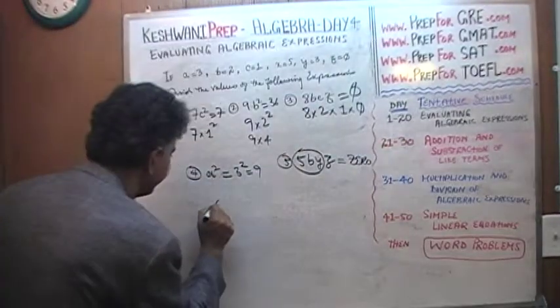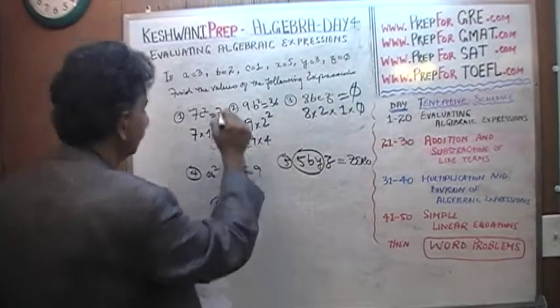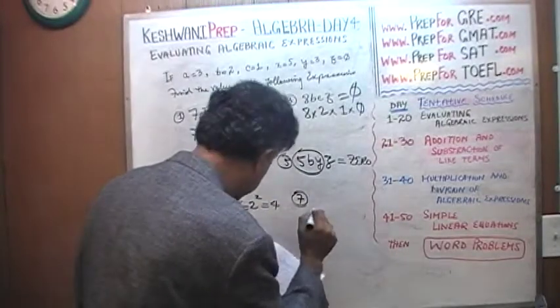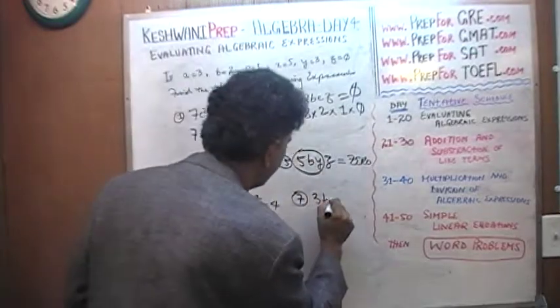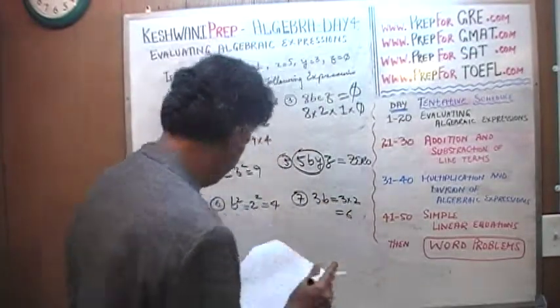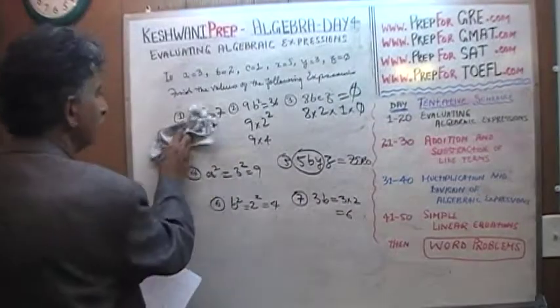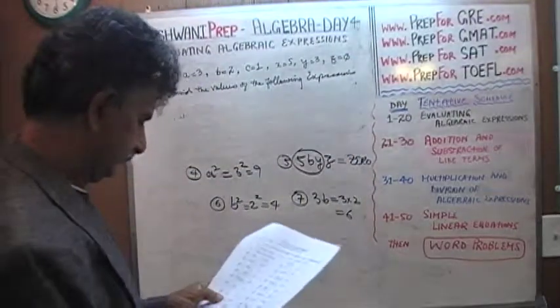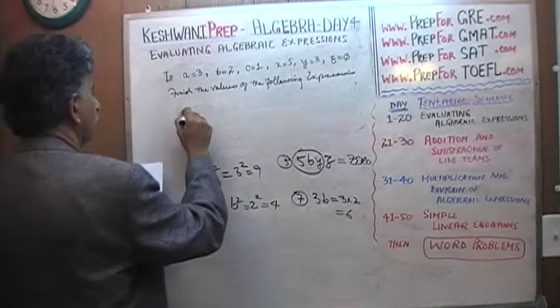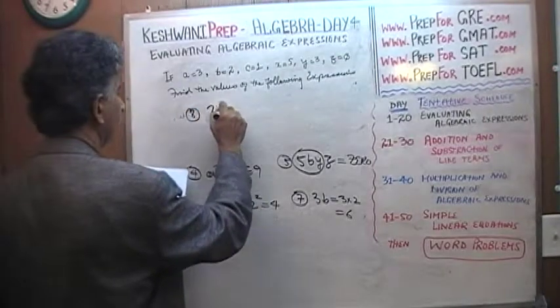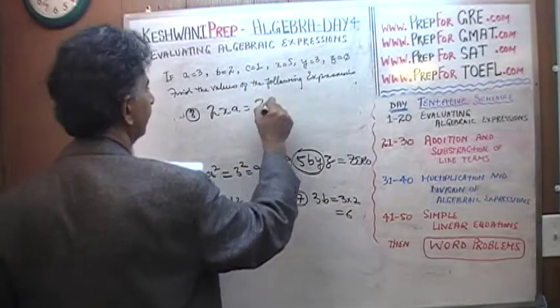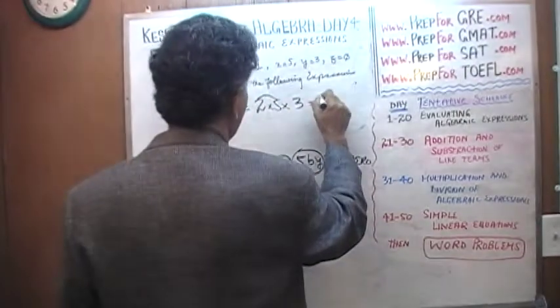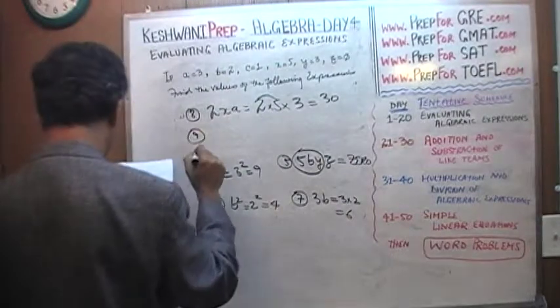Number six. B squared. B is two. So two squared is four. Seven. Three times b. B is two. Three times two, which is six. Eight. I don't want to keep doing this by the bottom here. Number eight. Two times x times a. Two times x which is five, times a which is three. Or two times five is ten. Ten times three is thirty.